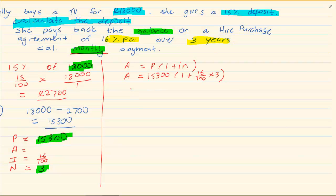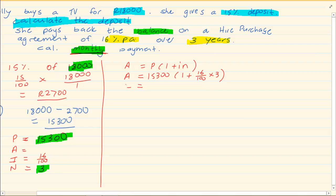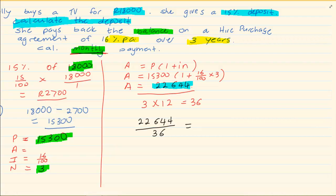We substitute what we have. Then you are going to use your calculator. And when you use your calculator you are going to get 22,644 Rand. Now how many months did she pay for? She took it for 3 years and she paid monthly. So it's 3 times 12 which equals 36. We are now going to take the entire total and we are going to divide it by 36. So we are going to say 22,644 divided by 36. This will give us our monthly payment.